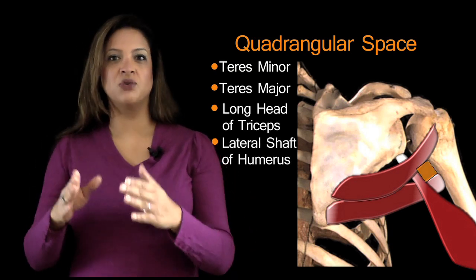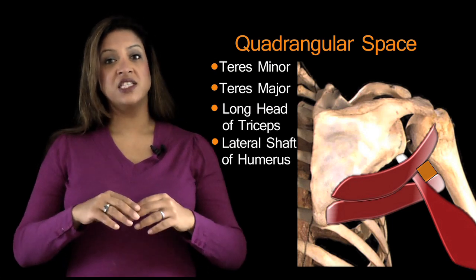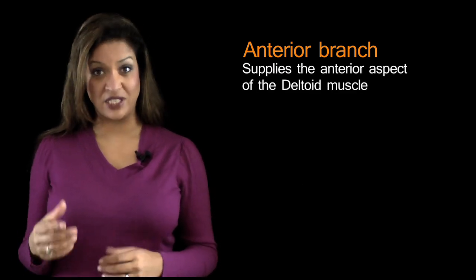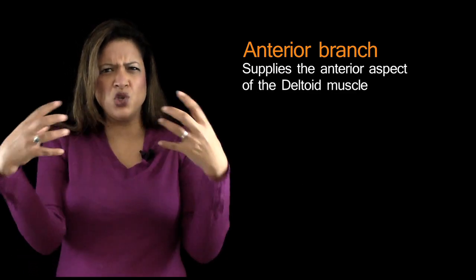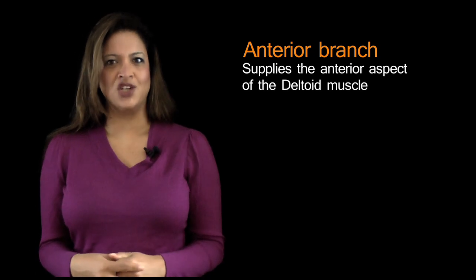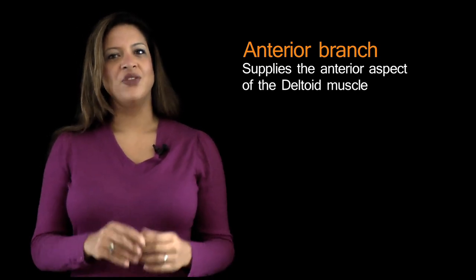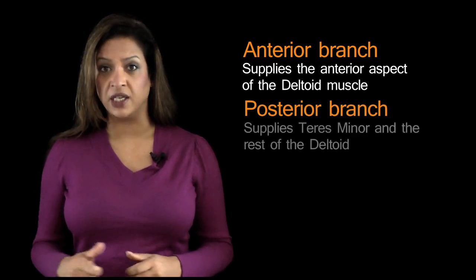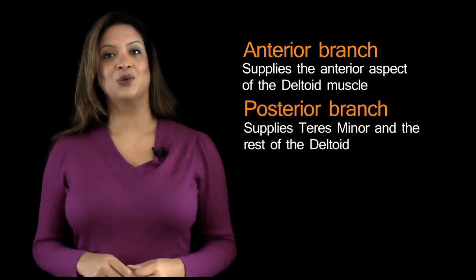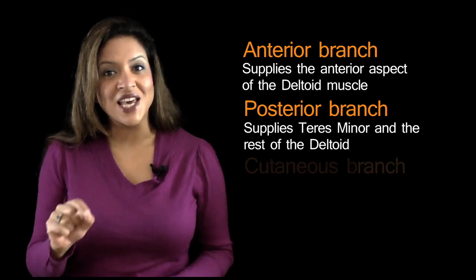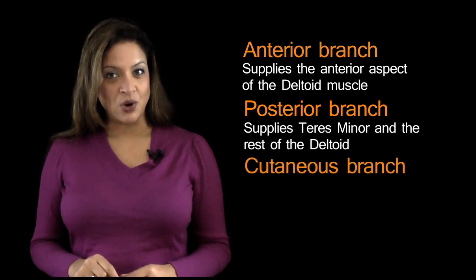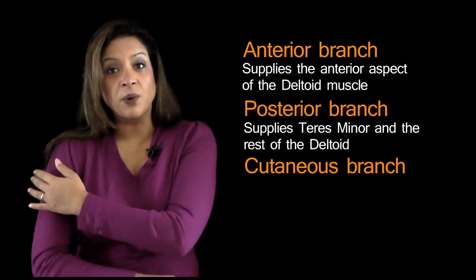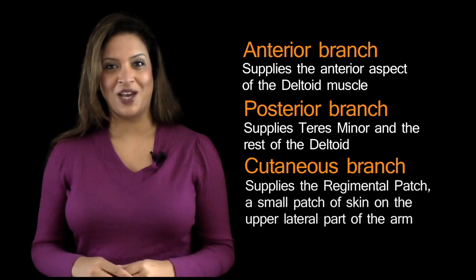Once it passes through the quadrangular space, it divides into two branches: an anterior branch which supplies the anterior aspect of the deltoid muscle — that beautiful rounded muscle that gives the shoulder its shape — and a posterior branch which supplies teres minor and the rest of the deltoid. It also gives off a cutaneous branch supplying a small patch of skin on the upper lateral part of the arm, the so-called regimental patch.